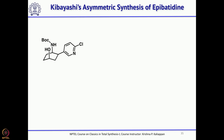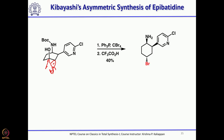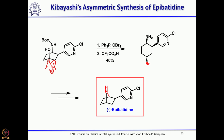For the intramolecular SN2 reaction to take place, the stereocenter must be inverted — the leaving group should be alpha. He converted the alcohol into a bromide by treating with triphenylphosphine and CBr4, which undergoes SN2 reaction to form the bromide at that position. Then trifluoroacetic acid removed the Boc group to give the amino bromide. Once you have this amine and the bromide, refluxing with acetonitrile or chloroform allows automatic intramolecular SN2 reaction to give epibatidine.